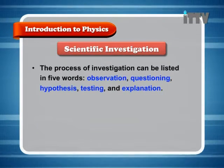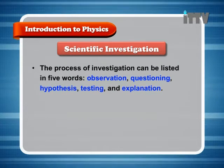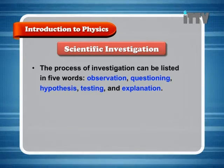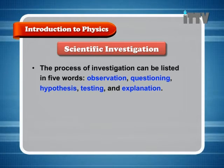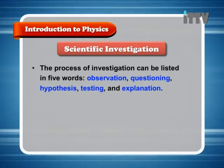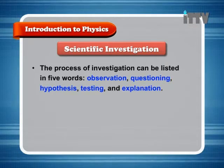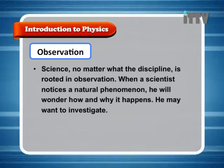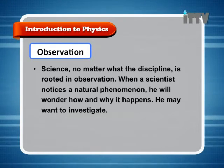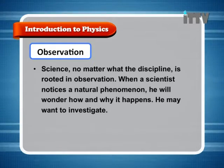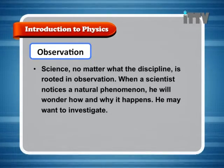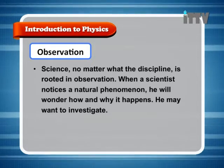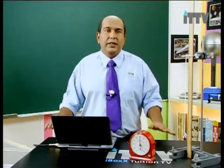The process of scientific investigation can be listed in five words: Observation, Questioning, Hypothesis, Testing, and Explanation. Science, no matter what the discipline, is rooted in observation. When a scientist notices a natural phenomenon, he will wonder how and why it happens. He may want to investigate, so it all begins with observation.